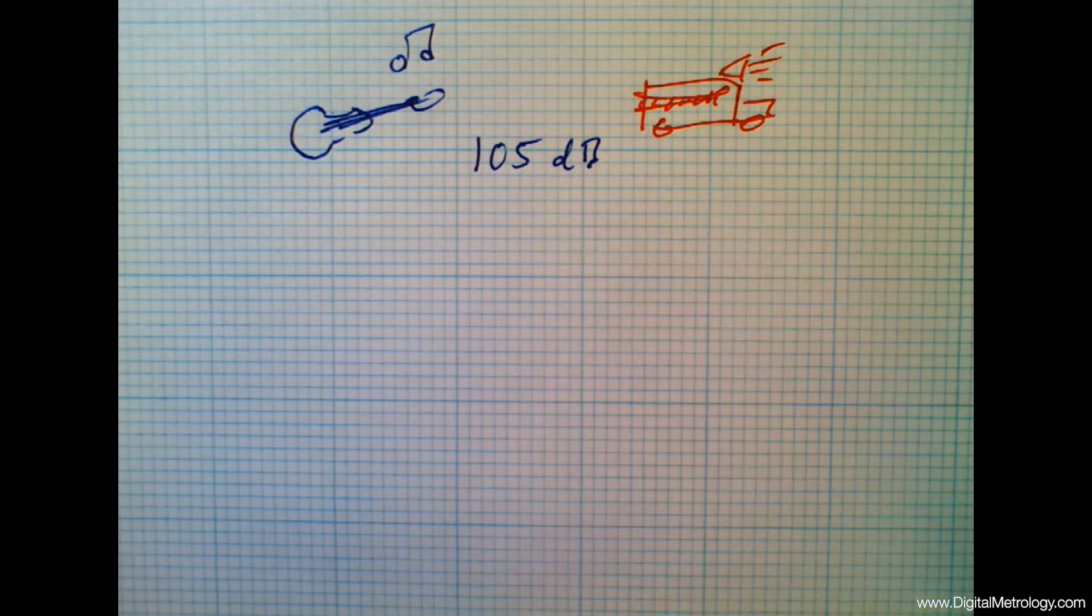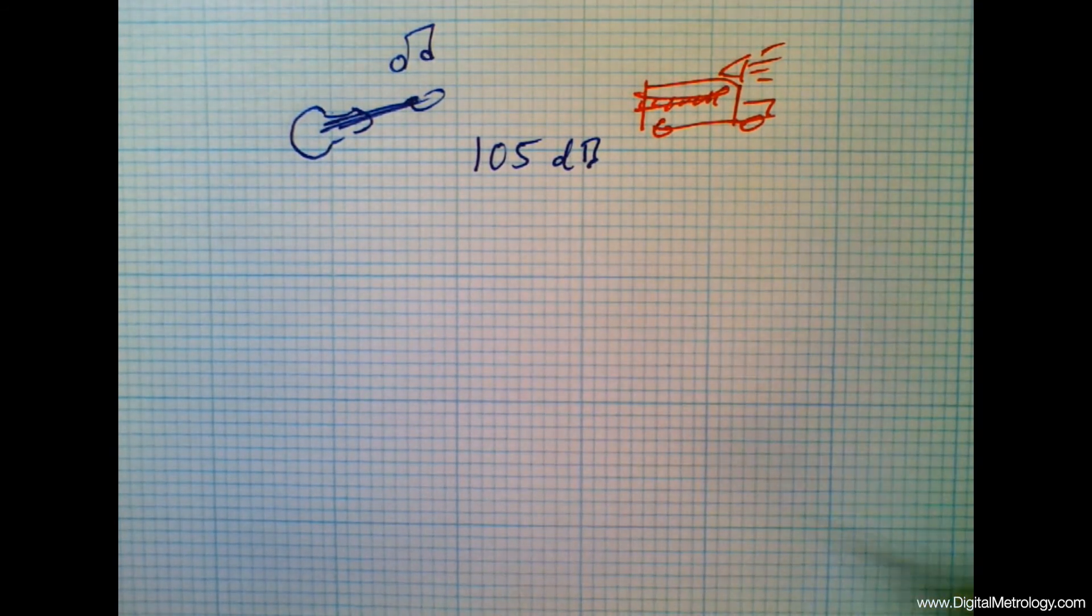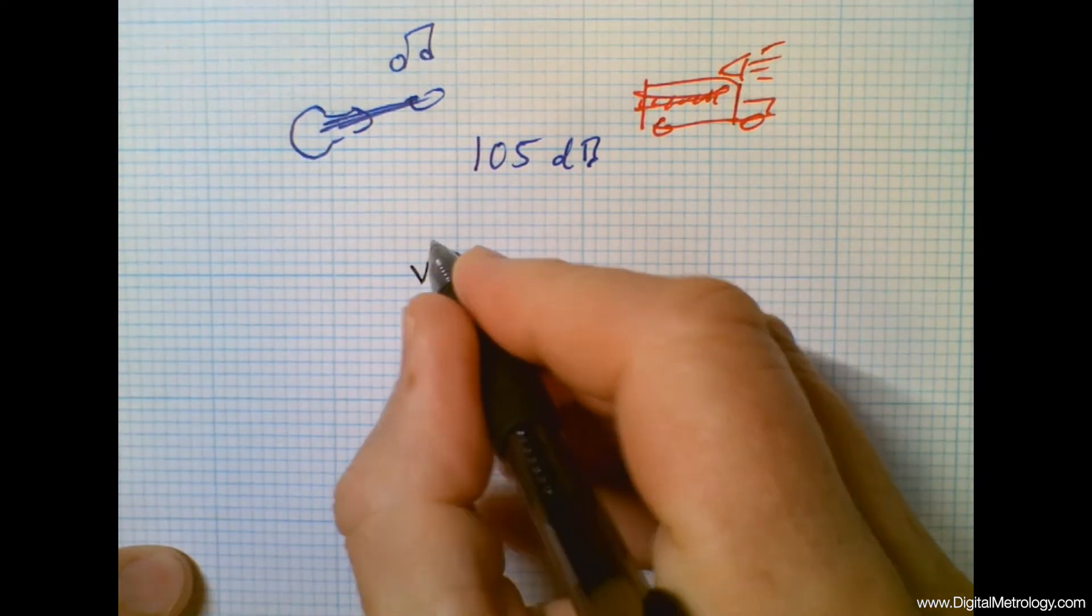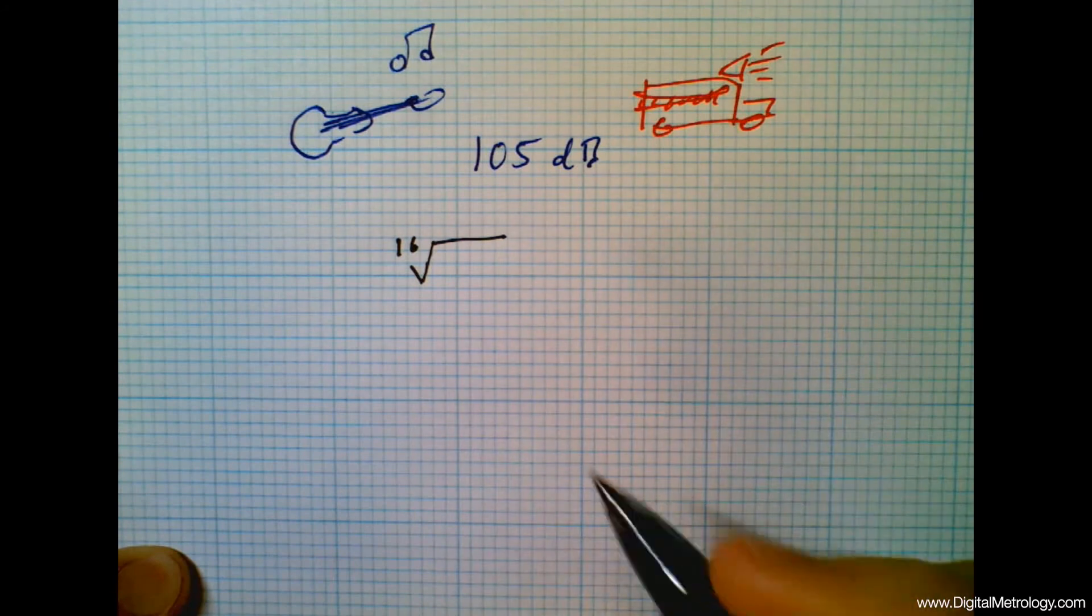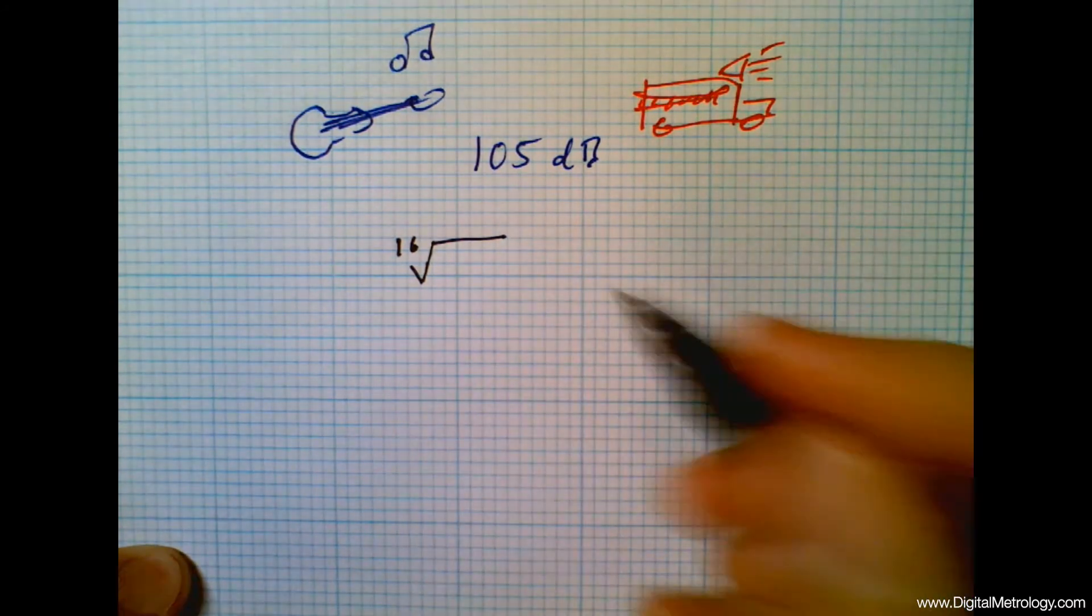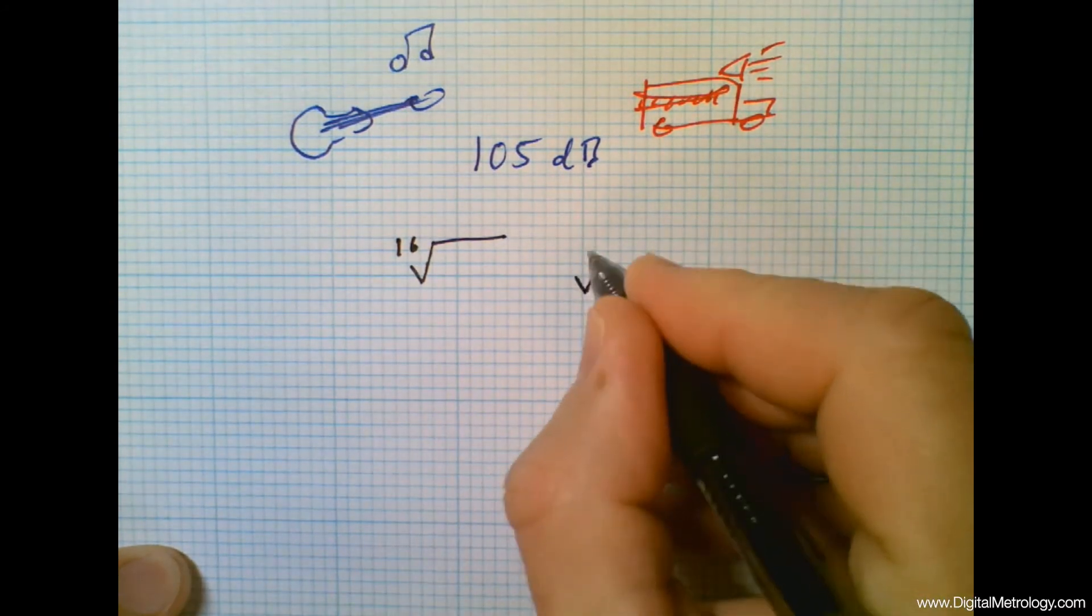But yet we still put numbers on things as engineers. In fact, we put numbers on roughness. We say the surface finish must be less than 16 micro inches RA in an old school kind of specification.